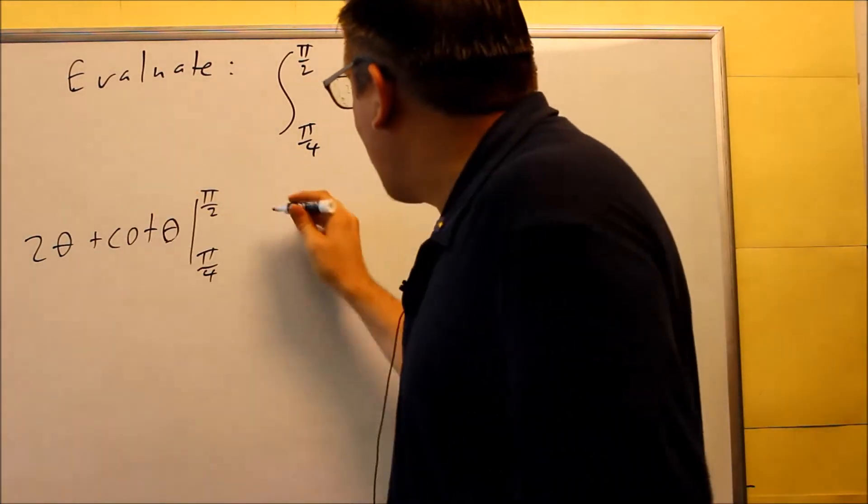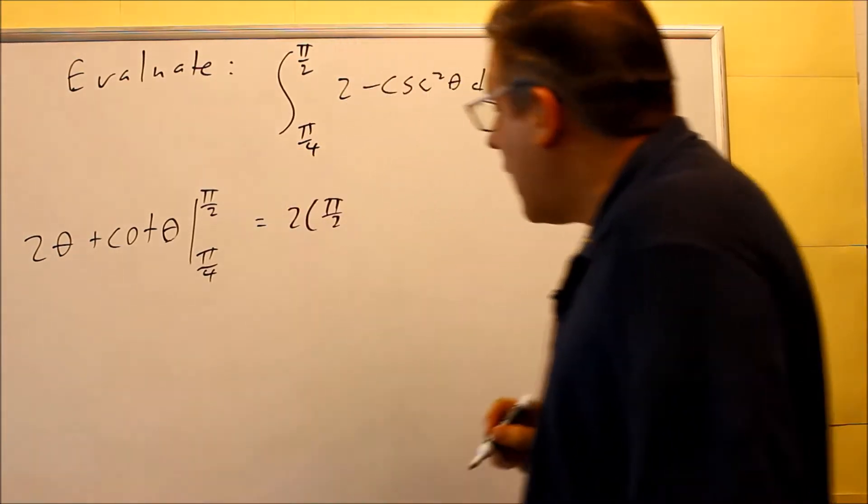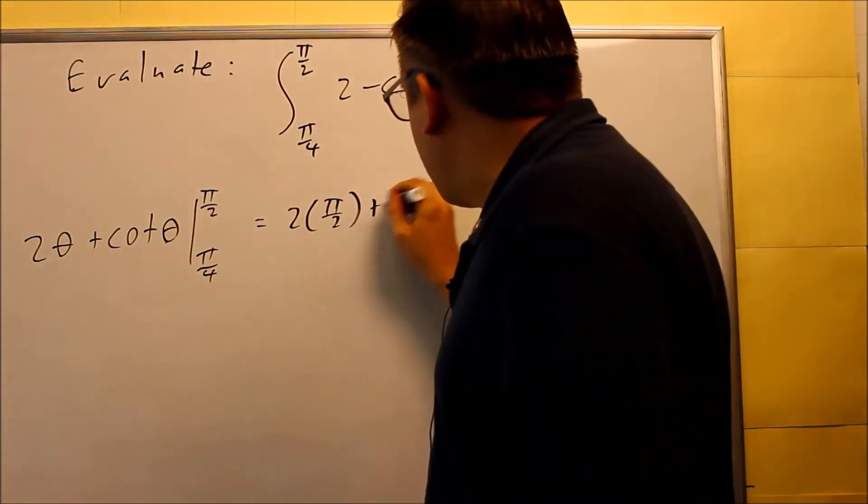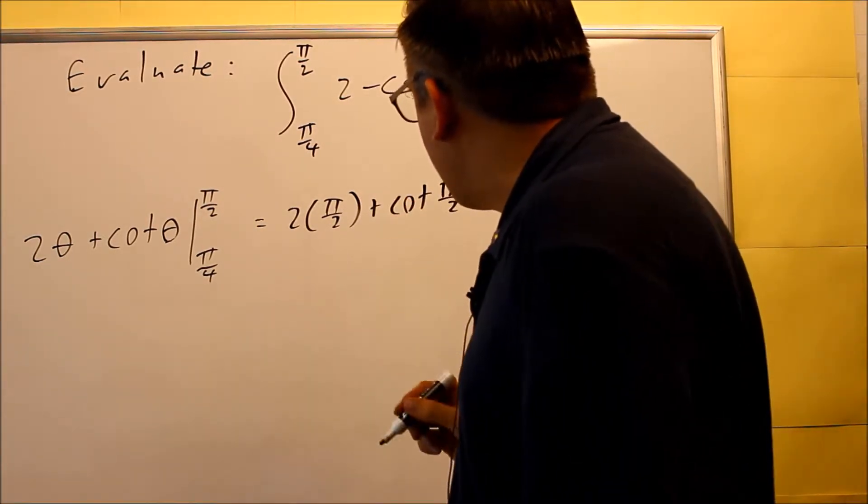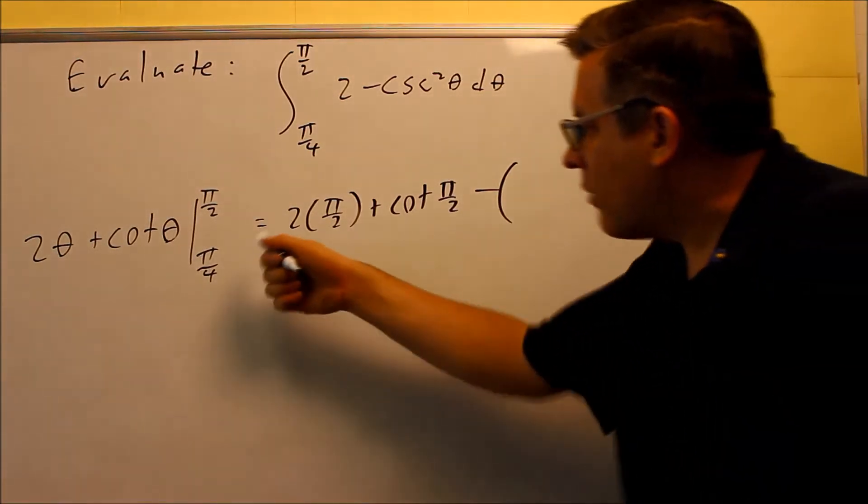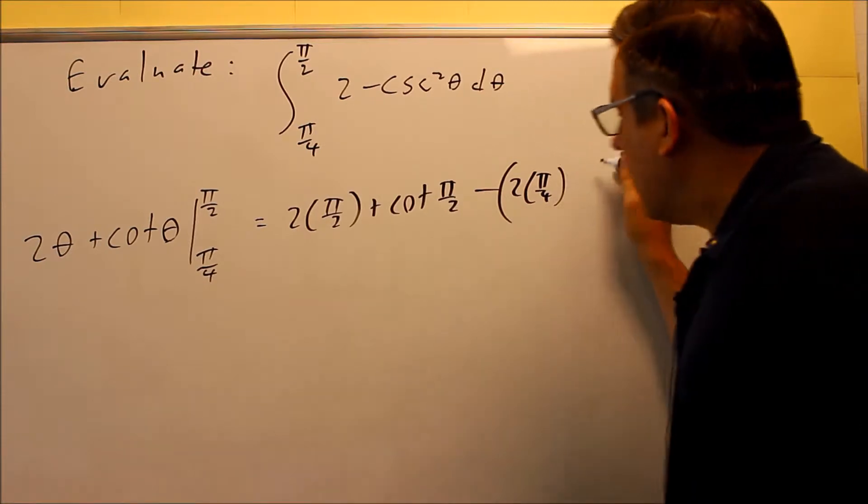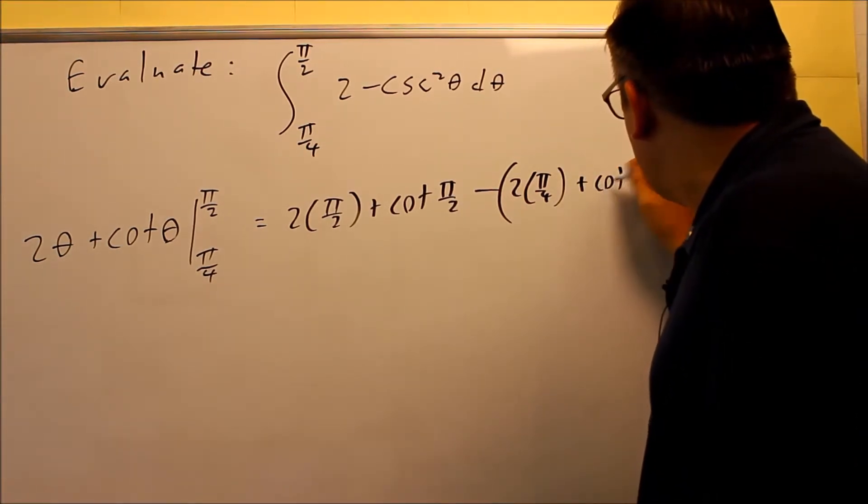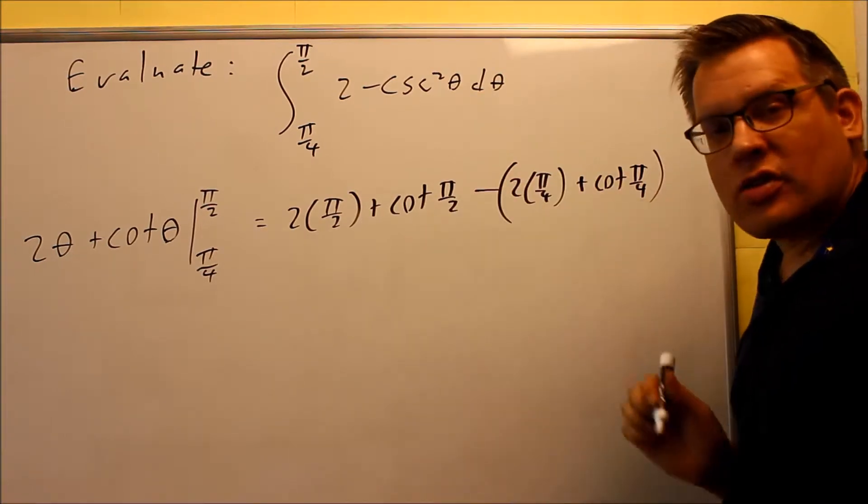So we first put π over 2 in for both of those. So 2 times π over 2, I should say. And then we have plus cotangent π over 2. We do that part first. And then minus, all this will go in parentheses. We're going to put the π over 4 in there. So 2 times π over 4, and then plus cotangent π over 4.